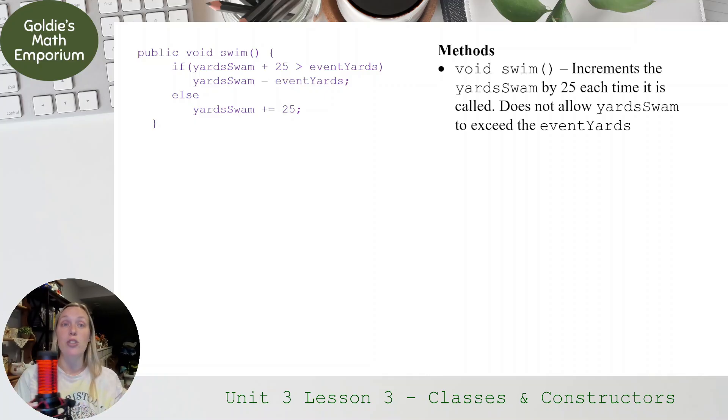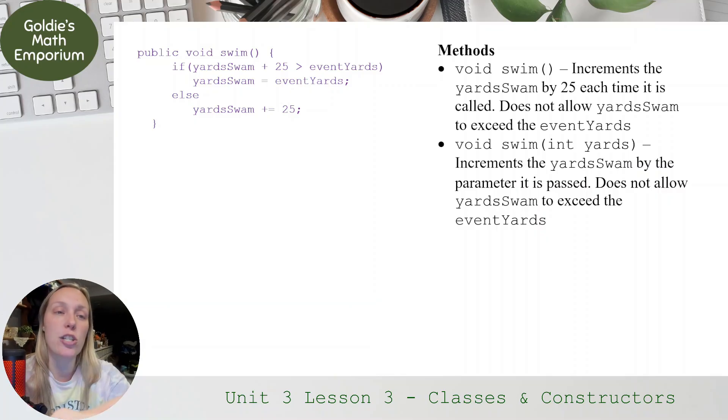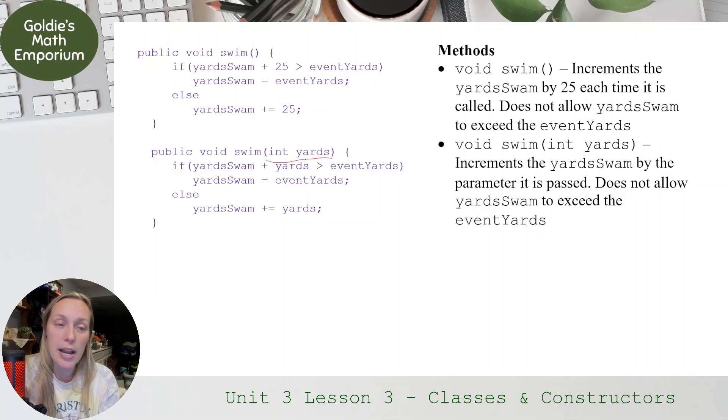I'm not returning anything because I'm just modifying the yardsSwim here. A few different ways you can do that. That's just one example of the code that you can write for that. My next method is also called swim, but this time it accepts a parameter. It increments yardsSwim by the parameter it's passed and it does not allow yardsSwim to exceed the eventYards. So almost the exact same thing as the one I just wrote, except instead of just adding 25, I add the parameter. So all I'm going to do for this is actually change it. So instead of 25 right here, it's going to be the exact same code. But instead, I'm going to put yards because the parameter is going to be passed in a specific number of yards that we're going to swim. So you see here, I put in the parameter and all that's changed between the last one and this one is just adding in those yards.